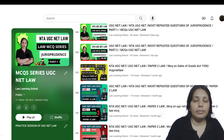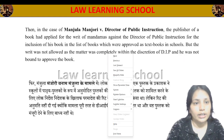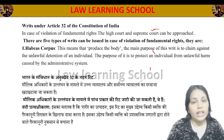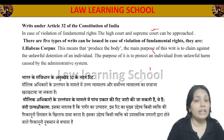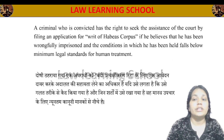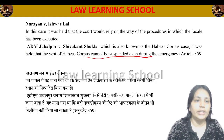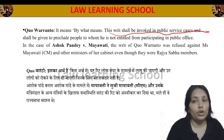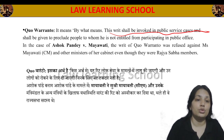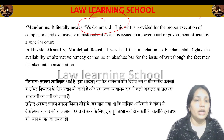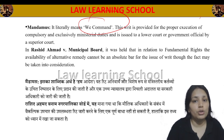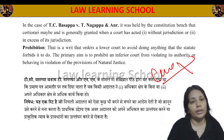Let us revise the five writs. When someone is detained unlawfully, we file Habeas Corpus to protect the individual. The second writ is Quo Warranto — if a person is not entitled to hold public office, then this writ is issued. Mandamus means 'we command' — it commands an inferior authority to perform their duty. Certiorari is used to certify and quash decisions made without jurisdiction. And Prohibition is issued to stop an inferior authority from acting beyond its jurisdiction.